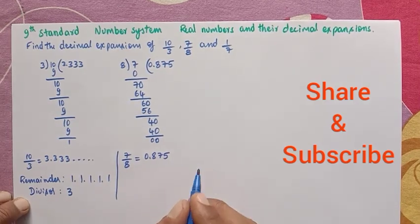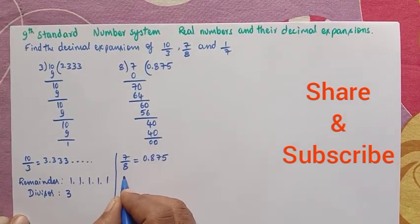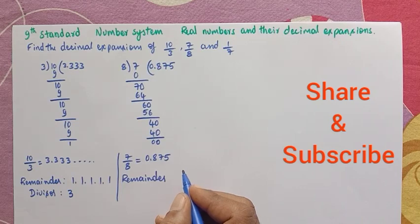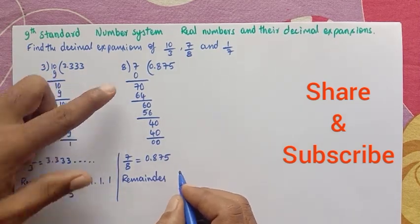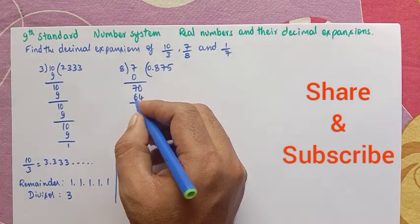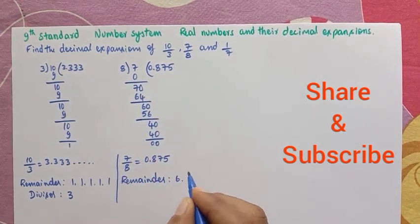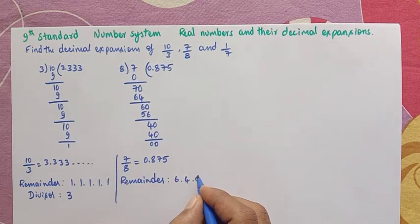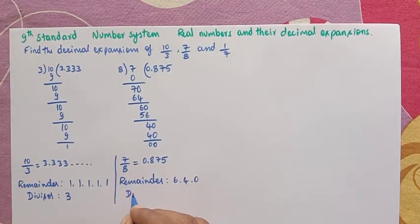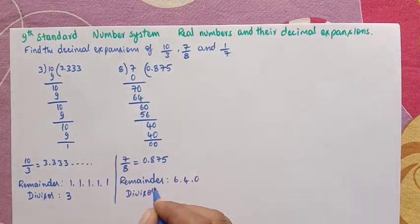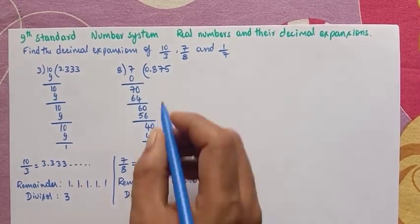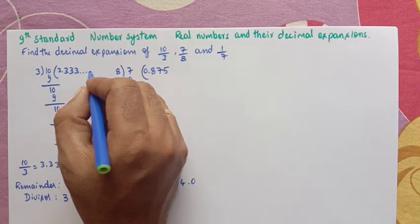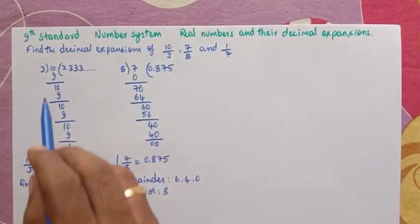No further digits are there. The remainder here: first remainder was 7, then 6, then 4, then 0. The divisor was 8. Here, it has terminated. Whereas in 10 by 3, it was recurring. If you further go on dividing, 3, 3, 3 continuously — it is not terminated, it is recurring.